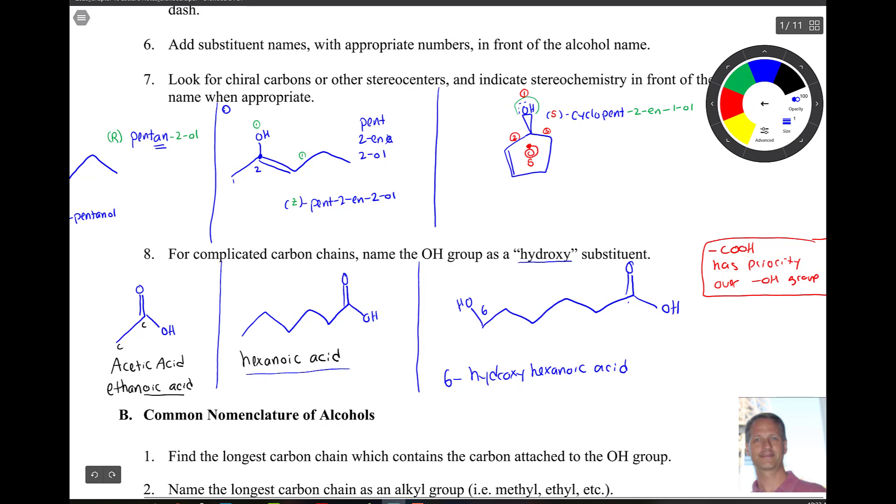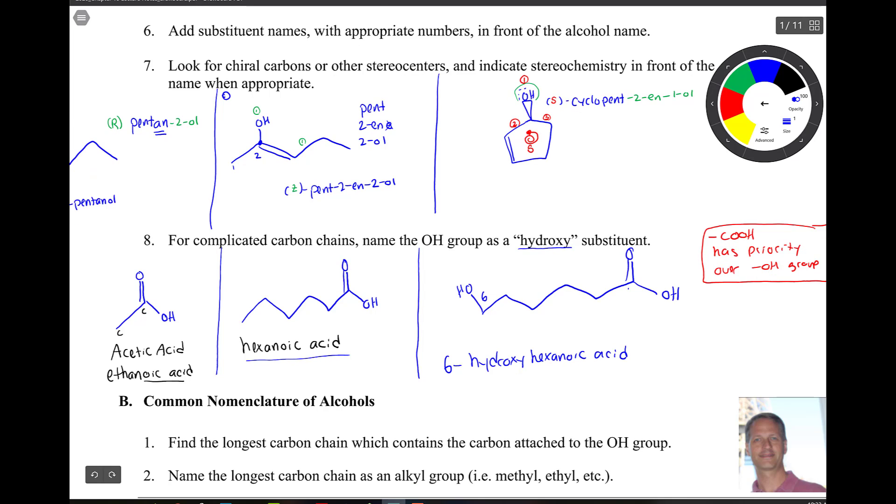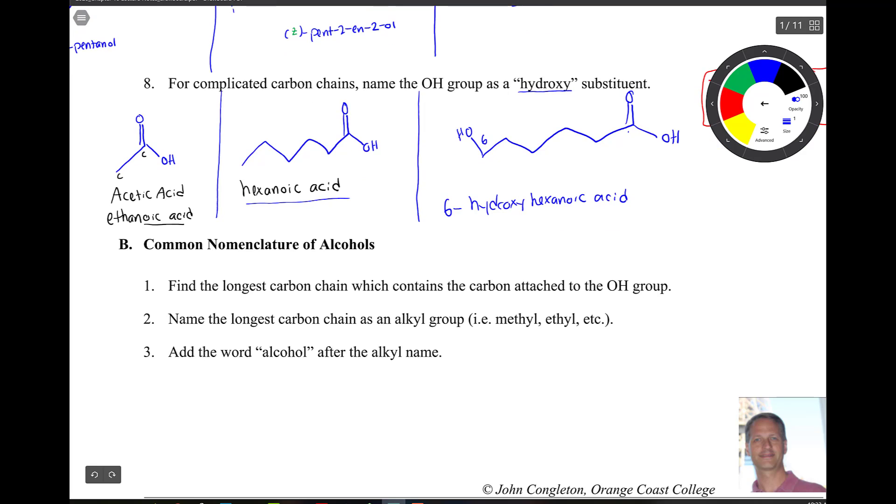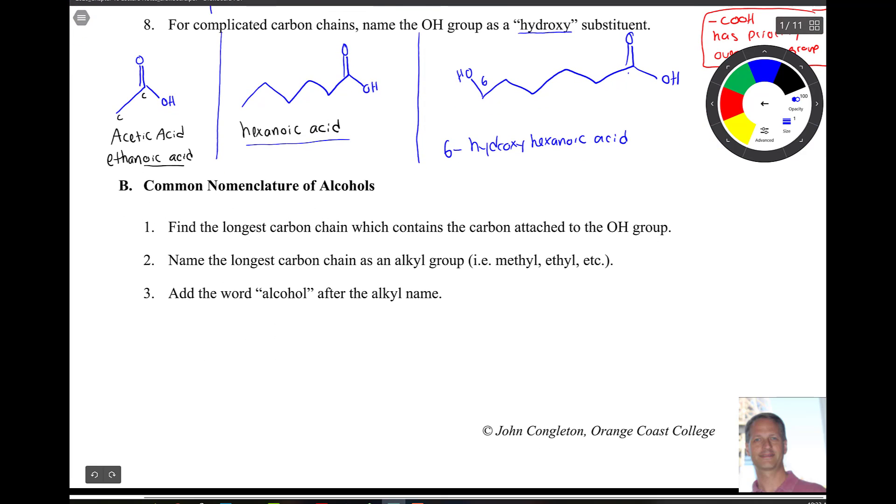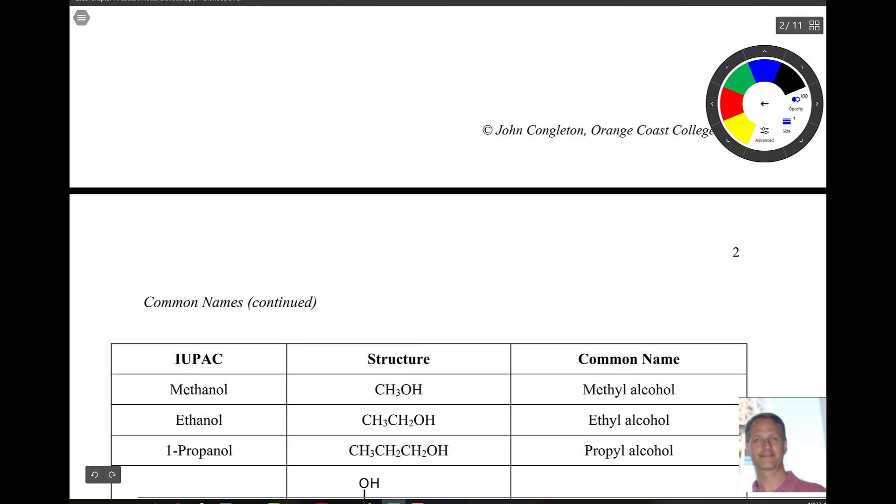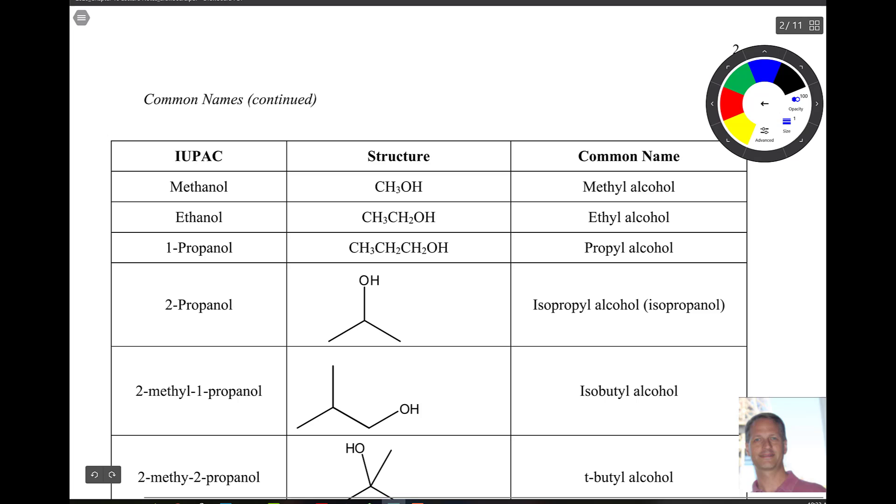Now there's some common names that we need to be familiar with here too. Common names are, there's a table on the next page here we'll look at, but you find that longest carbon chain that has the carbon with the OH. You name it as an alcohol group and you add the word alcohol after it. So let's take a look at the next page and look at a few of these things.